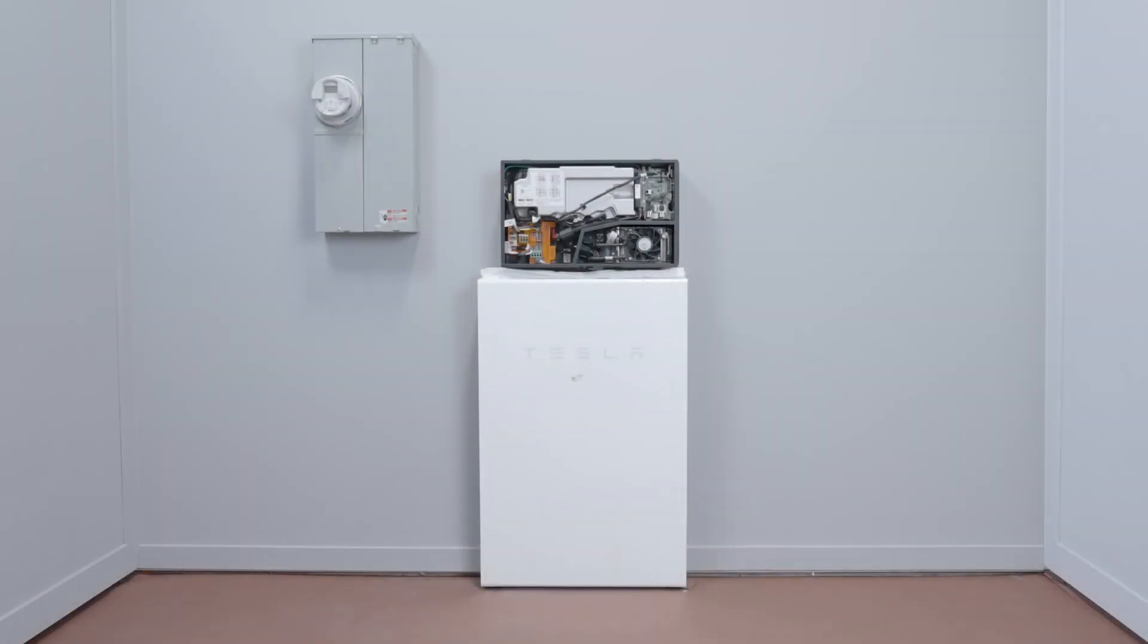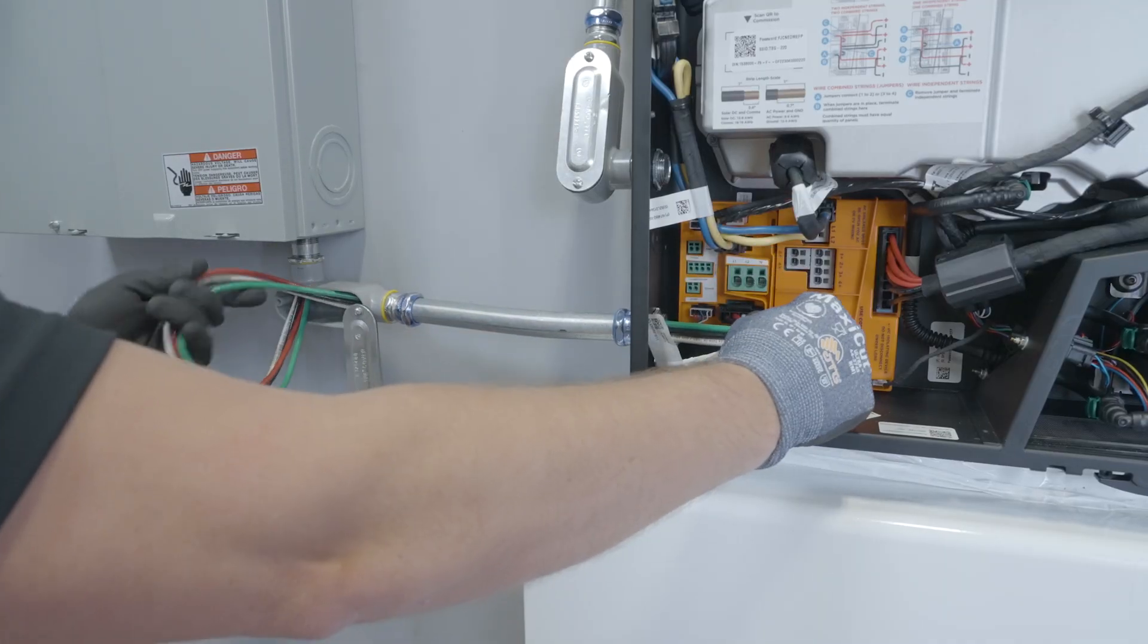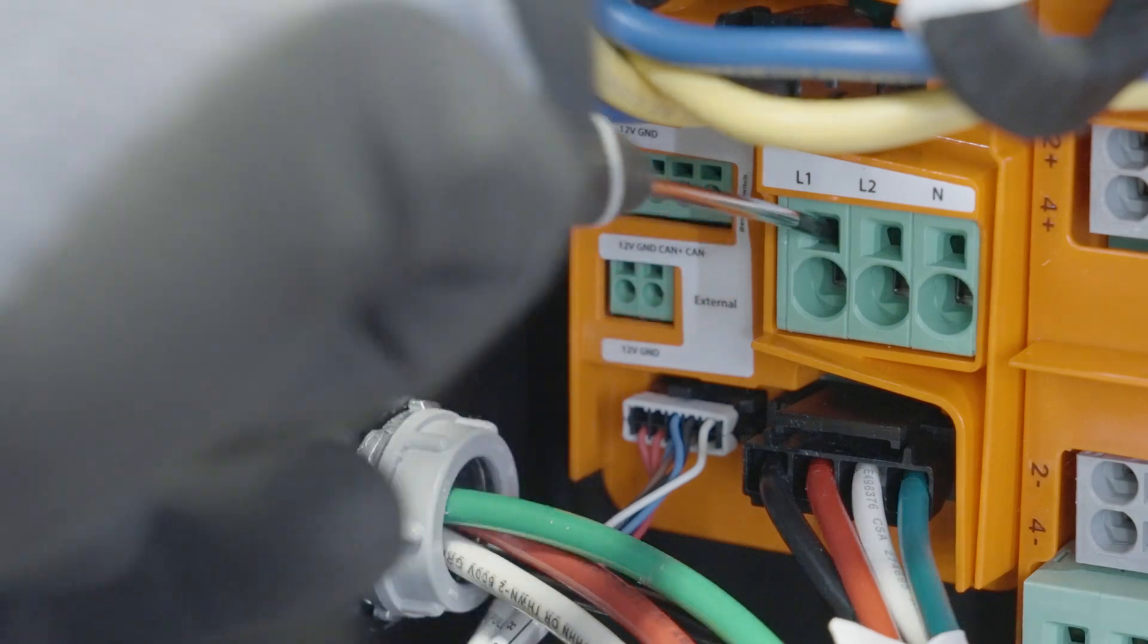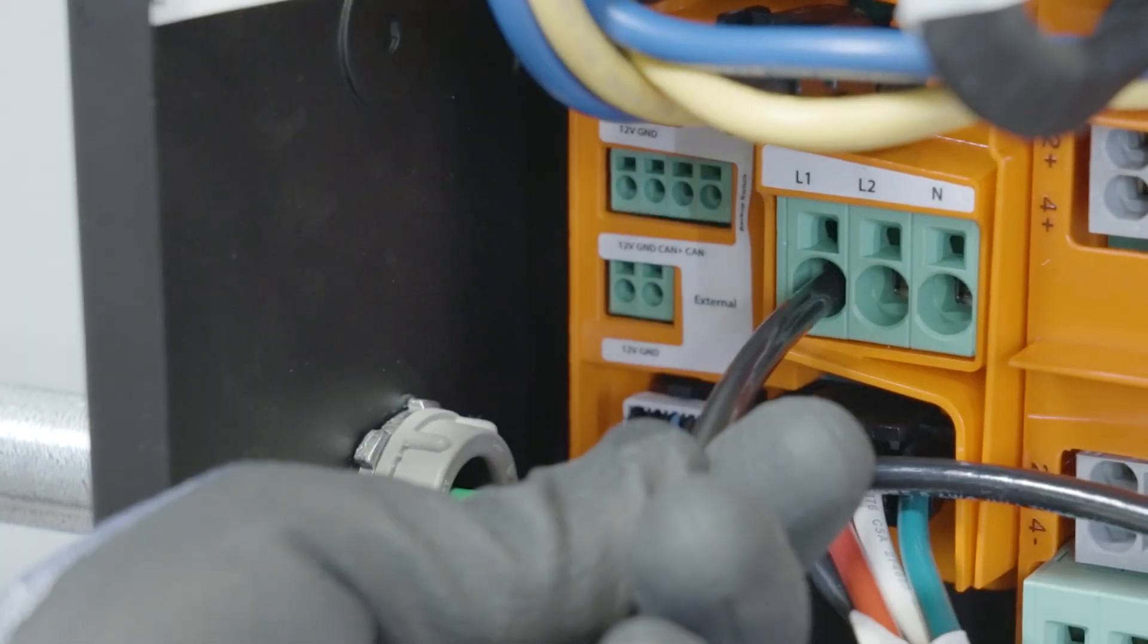Powerwall Plus is normally interconnected with a 50-amp two-pole breaker. This typically requires the use of number eight conductors. Strip half an inch of insulation from each AC conductor. Insert a cabinet-tip flathead screwdriver into the rectangular hole. This will open the adjacent circular terminal to receive the AC conductors.